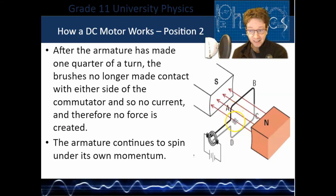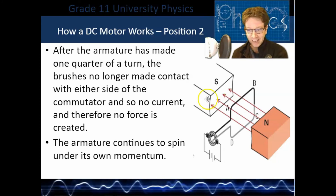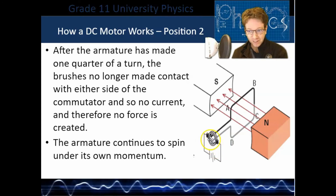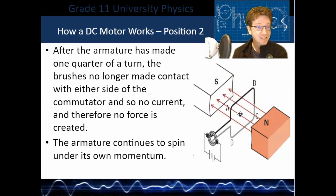As it moves clockwise it eventually reaches a position where the current direction and magnetic field are aligned and we don't want a force here. This is where the split in the commutator ring comes in. The brushes momentarily lose contact with the ring, cutting off the current — so there's no force acting on the armature at this point. Because of its own momentum or inertia, it continues to spin a little bit further until it reaches the next position.